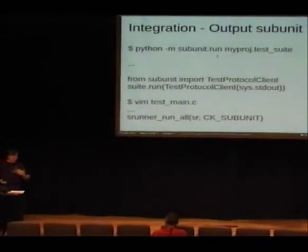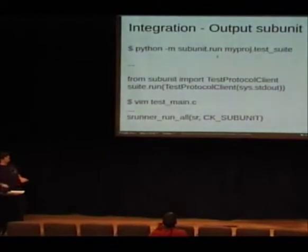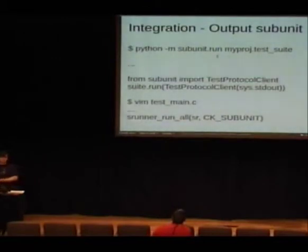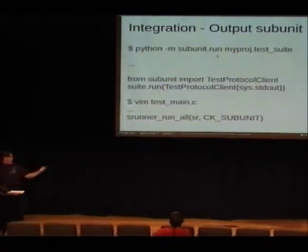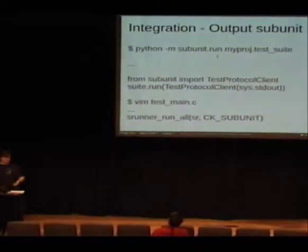Most of the toolchain stuff I've done is in Python, so a lot of these examples are focused there, but it should be fairly easy to see how you might do it for Ruby or another language if you've got the facility to reuse its test suite infrastructure. Running `python -m subunit.run myproject.testsuite` picks up the Python module and runs it, outputting the subunit stream. Alternatively, you can use `from subunit import TestProtocolClient` and call `suite.run` directly — useful if you're running things very manually.